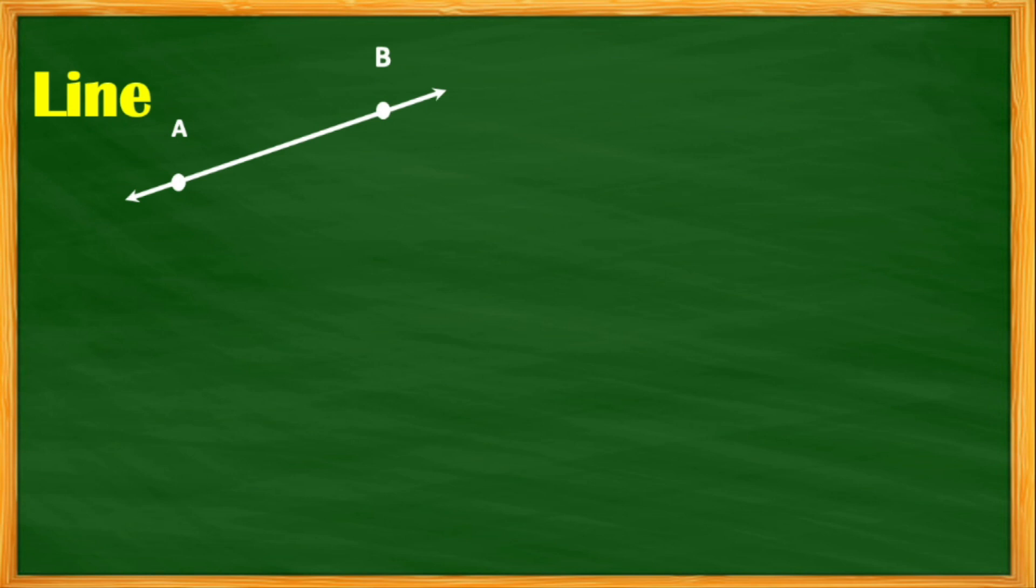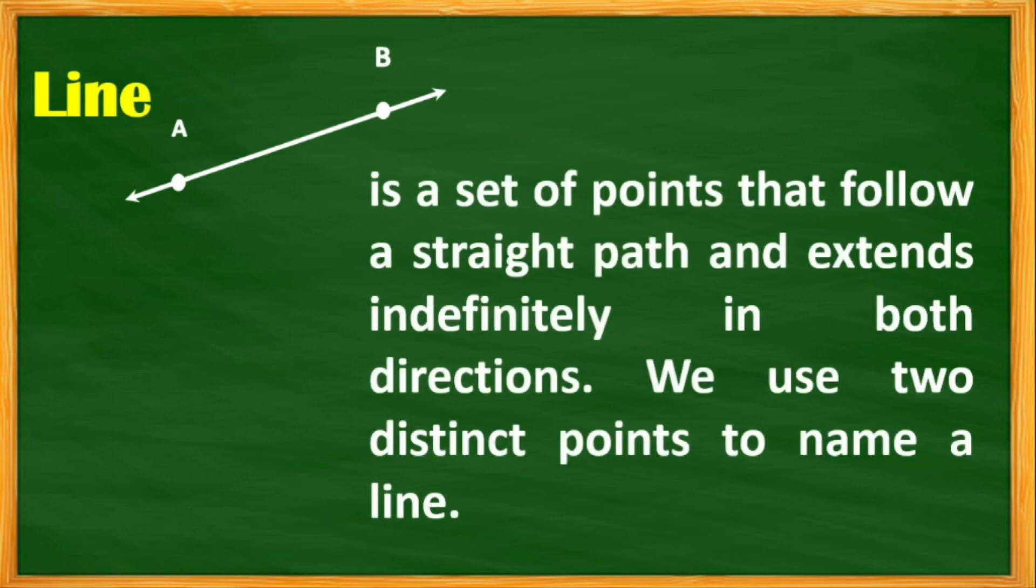Now, let's define first, line. Line is a set of points that follow a straight path and extend indefinitely in both directions. We use two distinct points to rename a line.